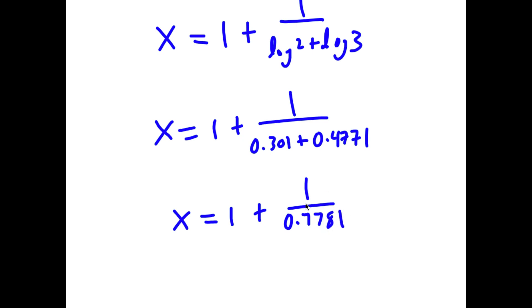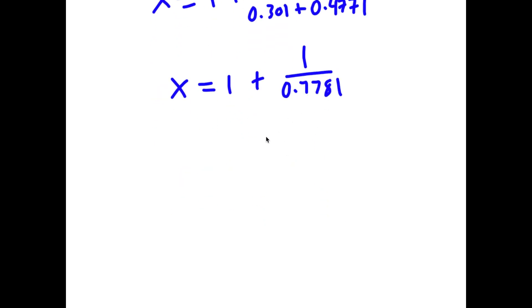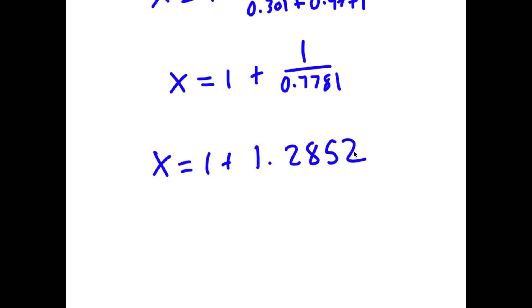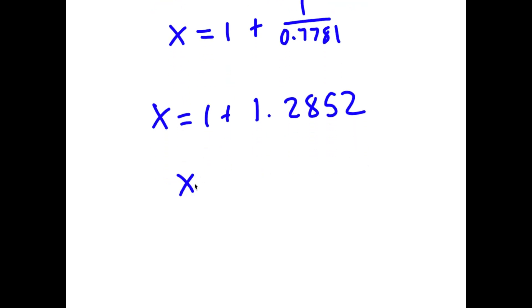And now 1 divided by 0.7781 is equal to 1.2852. So now 1 plus 1.2852 is 2.2852.